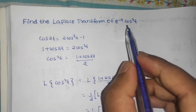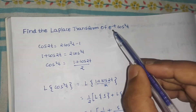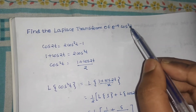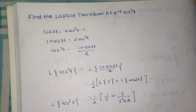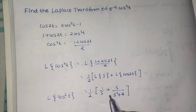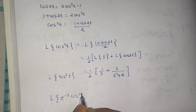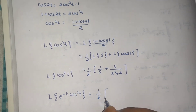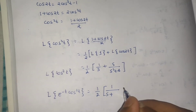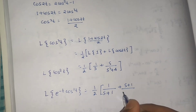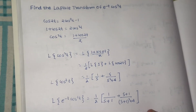But what we need to find, we have to multiply this by e to the power minus t. That means we apply the First Shift Theorem. The First Shift Theorem says that if we multiply the function, for which the Laplace transform is known, by e to the power at and then take the Laplace, we only need to replace s by s minus a. So the Laplace of e to the power minus t cos squared t is simply one half, replacing s by s minus a, where a is minus 1, giving s plus 1. Here also s plus 1 divided by s plus 1 whole squared plus 4. This is the final answer.